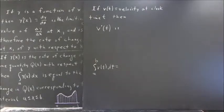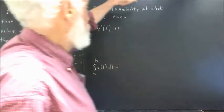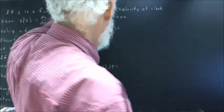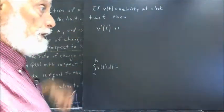A couple of brief examples. If v of t is velocity of some object at clock time t, then what does v prime of t mean?